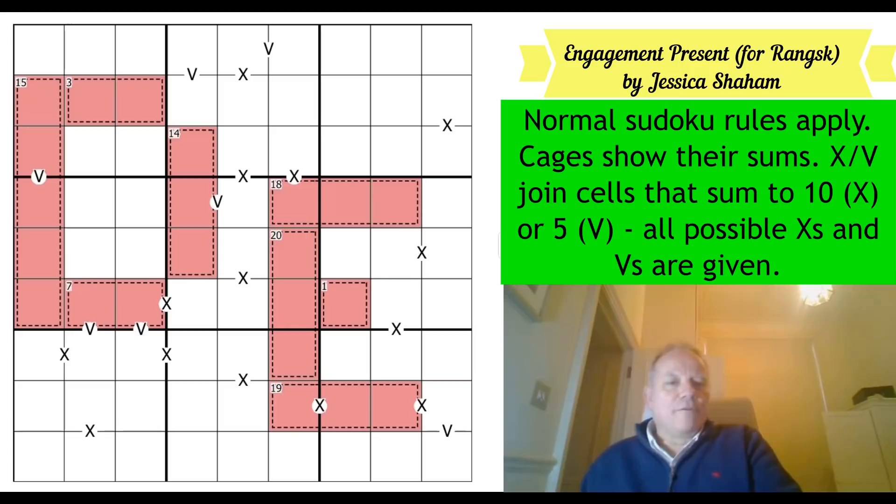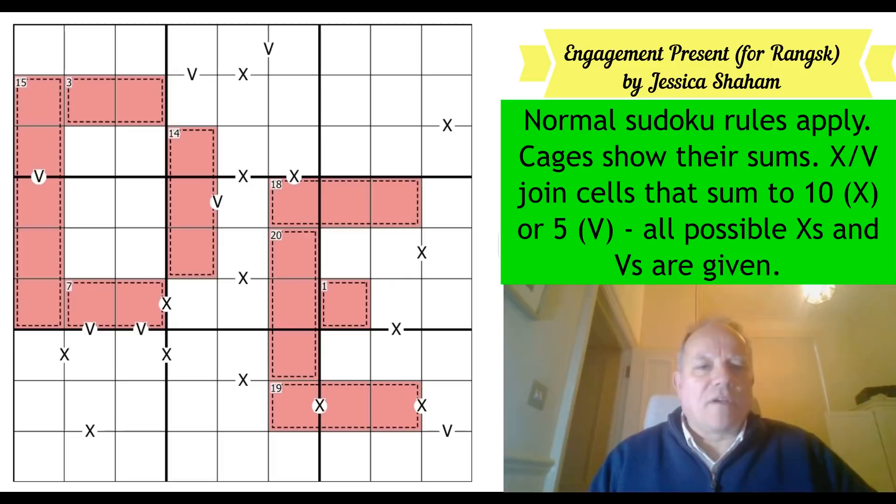Now, what is going on in the puzzle here? Well, we've got normal Sudoku rules. Cages show their sums. Normal killer rules there, basically. We have colored the killer rules red. I'll come back to that in a second. X and V cells are provided and the negative constraint does apply here. So every pair of cells that neighbor each other and add up to 10 in the grid are marked with an X. And every pair of cells that neighbor each other and add up to 5 are marked with a V.